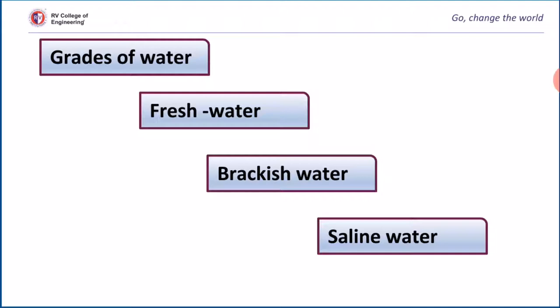Depending upon the salts dissolved, water can be divided into three categories. Fresh water contains dissolved salts up to 1000 mg per litre, whereas brackish water contains dissolved salts in the range of 1000 to 35000 mg per litre, while saline water contains more than 35000 mg per litre.